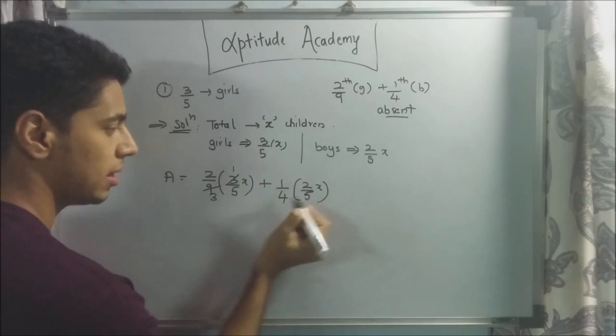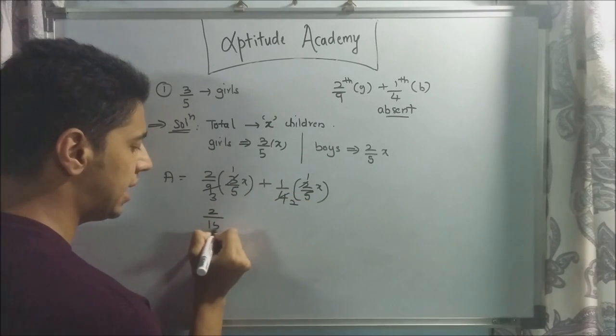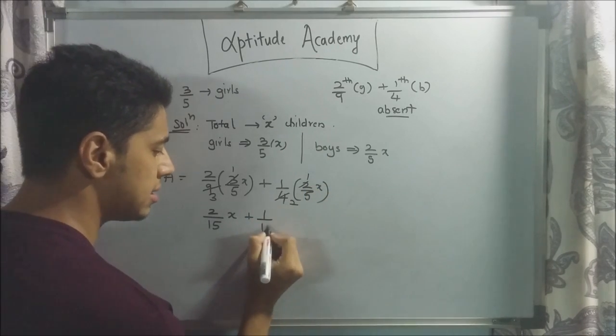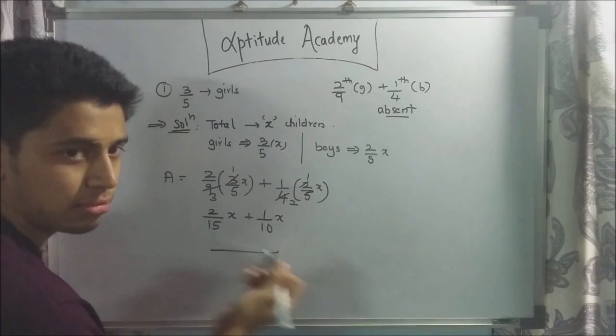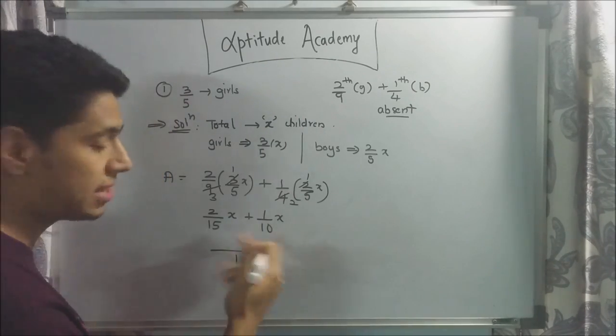3 times 3 are 9, 2 times 2 are 4. So this becomes 2/15 x. Plus, 1 over 5 times 2 is 10. So 1/10 x. We will take an LCM of 15 and 10. The easiest one is 150. Just multiply it. I know it's 30, but this is just for simplification.